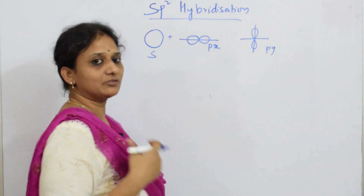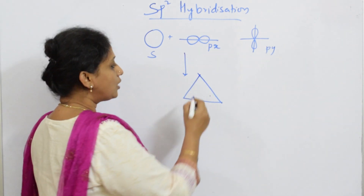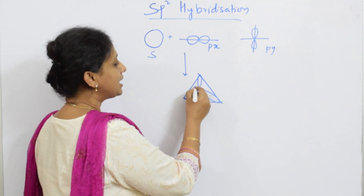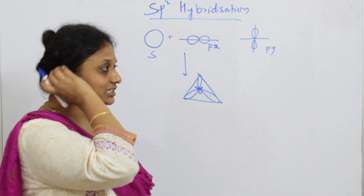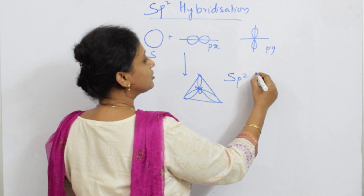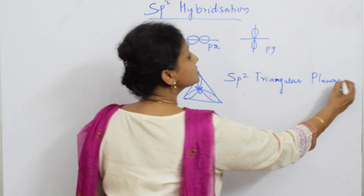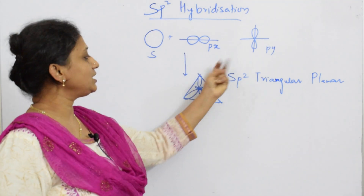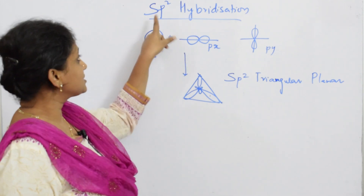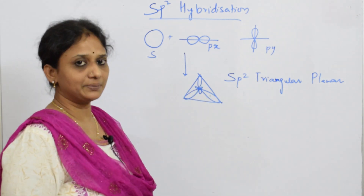Once these orbitals intermix to form a hybrid orbital, the shape looks exactly like a triangle. The lobes arrange themselves with a dot in the center — one lobe above and one lobe on each side — forming a triangular shape in a single plane. That is why SP2 hybridization gives a triangular planar structure. SP2 means 1 + 2 = 3, so three lobes form the triangular planar arrangement.